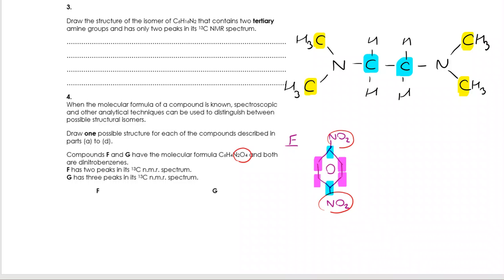For G, it has three peaks in its carbon-13 NMR spectrum. So I'm going to do another benzene ring and I'm going to move the nitro side chains around. I've put them on a one and a two. Both of these are identical, and then following the ring around, these two are identical and these two are identical.